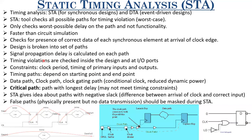The tool also looks for false paths. There can be false paths in your design — these are paths which are physically present but actually have no data transmission through them. For example, if one control signal is feeding the control terminal of a mux, no information passes through the control terminal — it only goes from input to output. So applying static timing analysis on the path feeding the control signal of a mux is of no use. Those are false paths and should be masked during static timing analysis. This is something which modern STA tools handle.